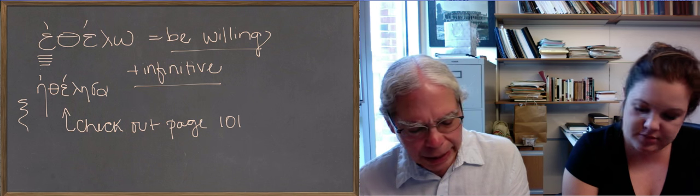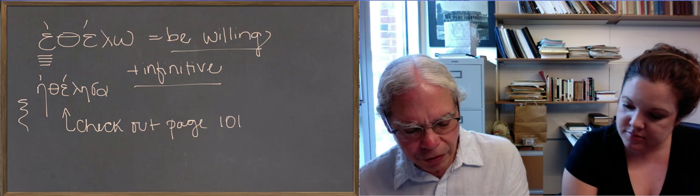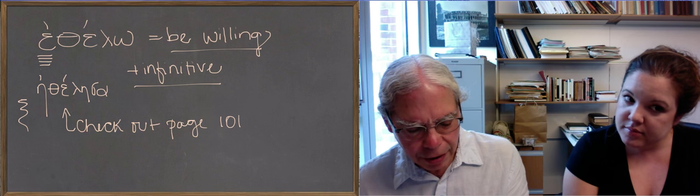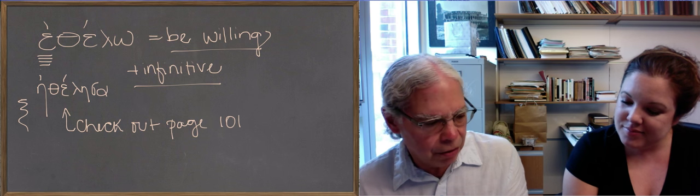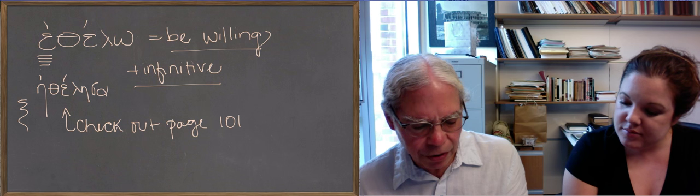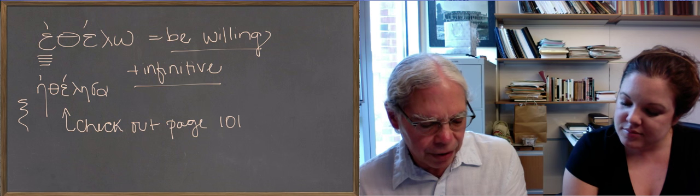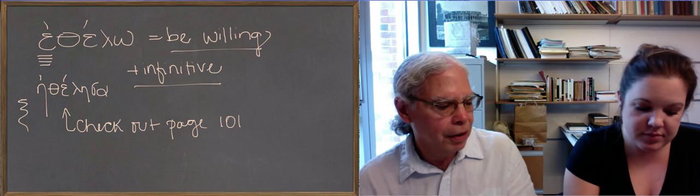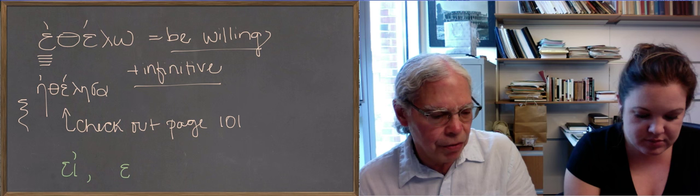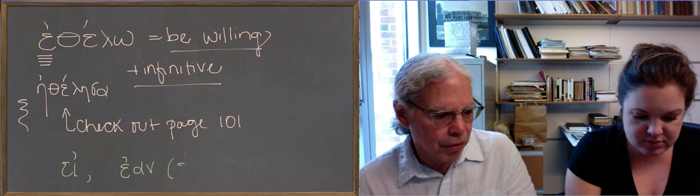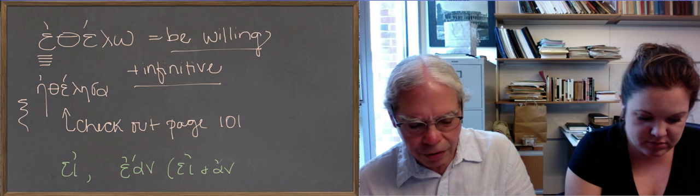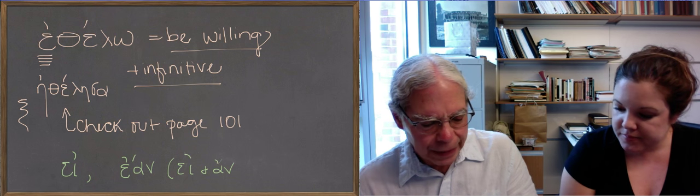So the next word is ei, the word for if. Notice it's a word without an accent. It says it's a particle. It's really a conjunction, I think. And it also gives you the form ean, which is just a mugging together of ei with the modal particle an. Again, what's the difference in meaning between these two? They both mean if. The an is there because it's a syntactic marker and you use it to distinguish different kinds of conditional sentences.